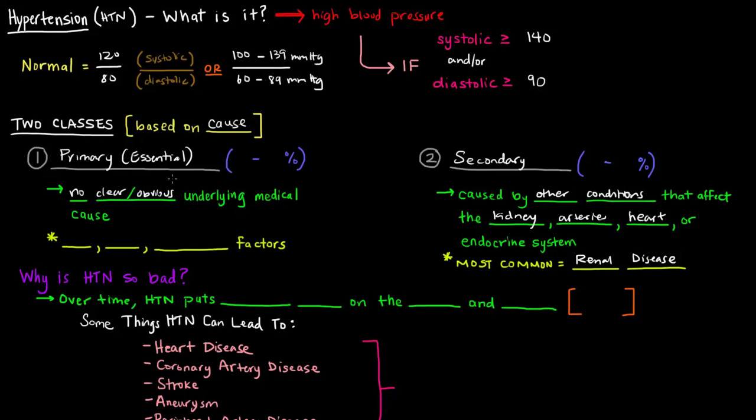Now, most cases of hypertension are primary hypertension. About 90 to 95% are primary hypertension. There's no clear underlying cause. And secondary makes up about 5 to 10% of the other cases. As far as primary or essential hypertension goes, age, genetics, and environment are all factors that seem to be contributing to primary hypertension.